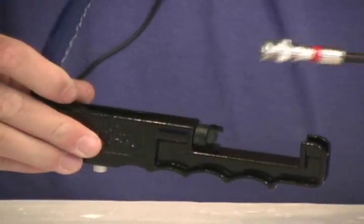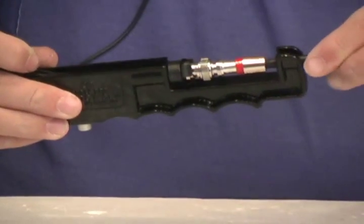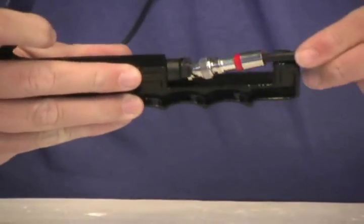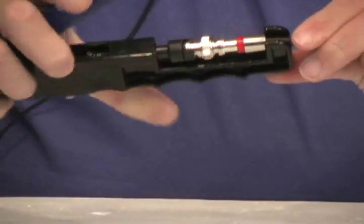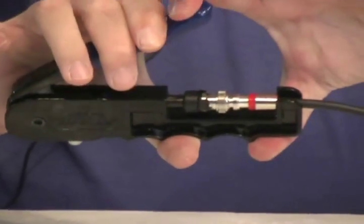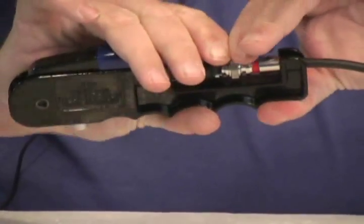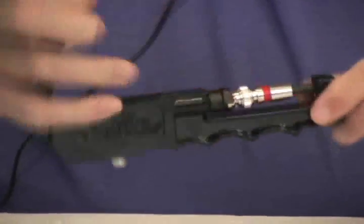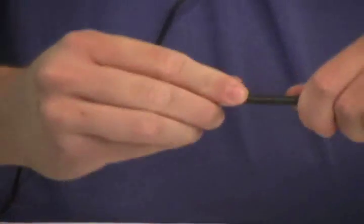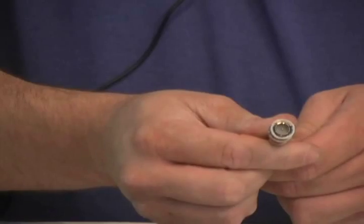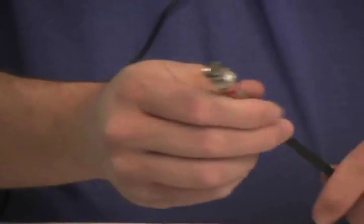...you take your compression tool, place it in there and then you mash it down. I'm trying to do this so you can see. Once you've done that, you have a nice tight crimp and you're ready for CCTV.